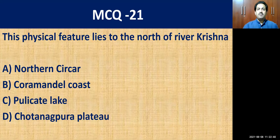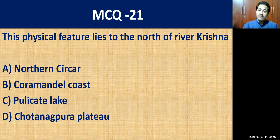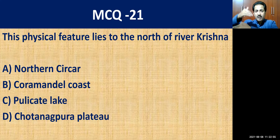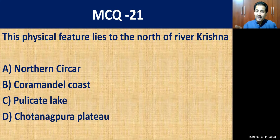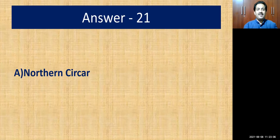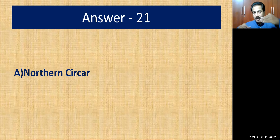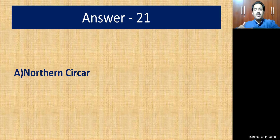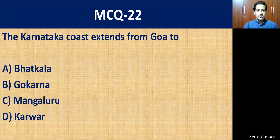MCQ question number twenty-one: this physical feature lies to the north of river Krishna. River Krishna flows to the Bay of Bengal and creates a northern and southern part. The correct answer is Northern Sarkar. The southern part is called Coromandel. River Krishna divides the eastern coastal feature into two parts — Coromandel in the south and Northern Sarkar in the north.